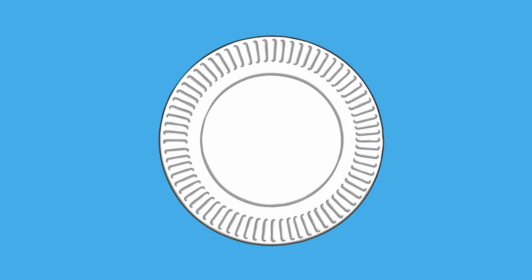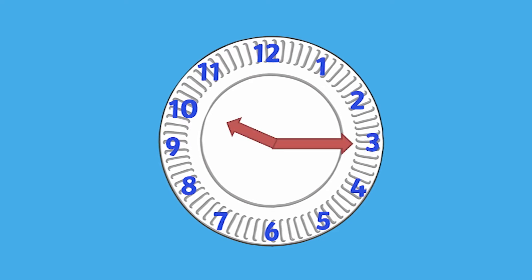Or, if you want to do it on a smaller scale, you'll need a paper plate. Simply write some numbers on it and use a split pin with some arrows that you can rotate. You can definitely keep using this every time your child learns about time.